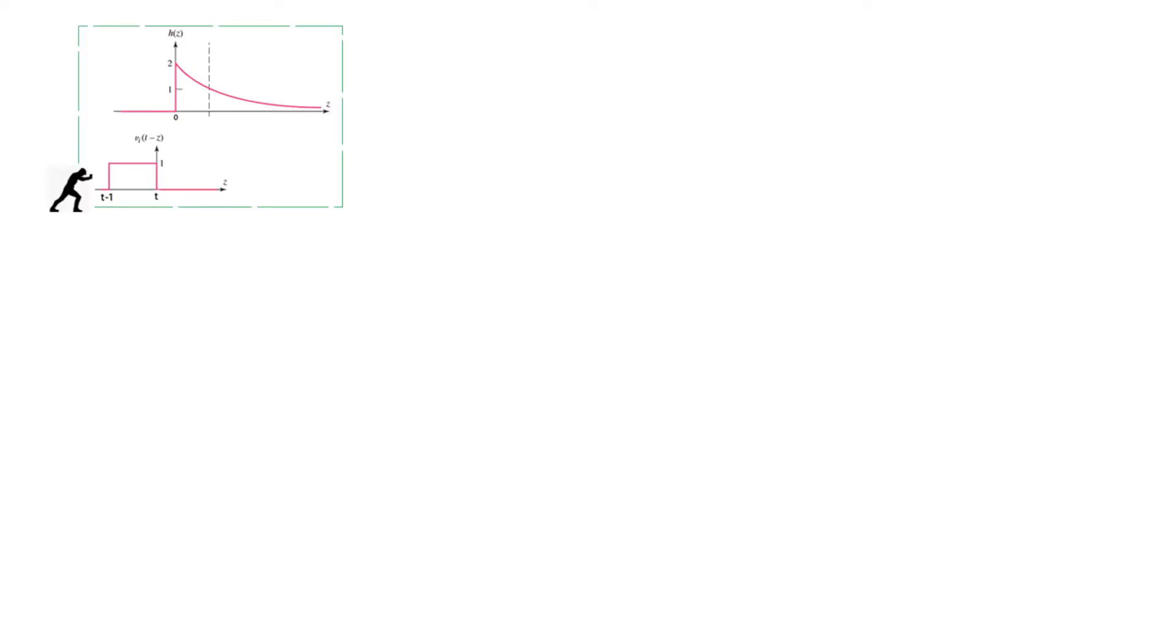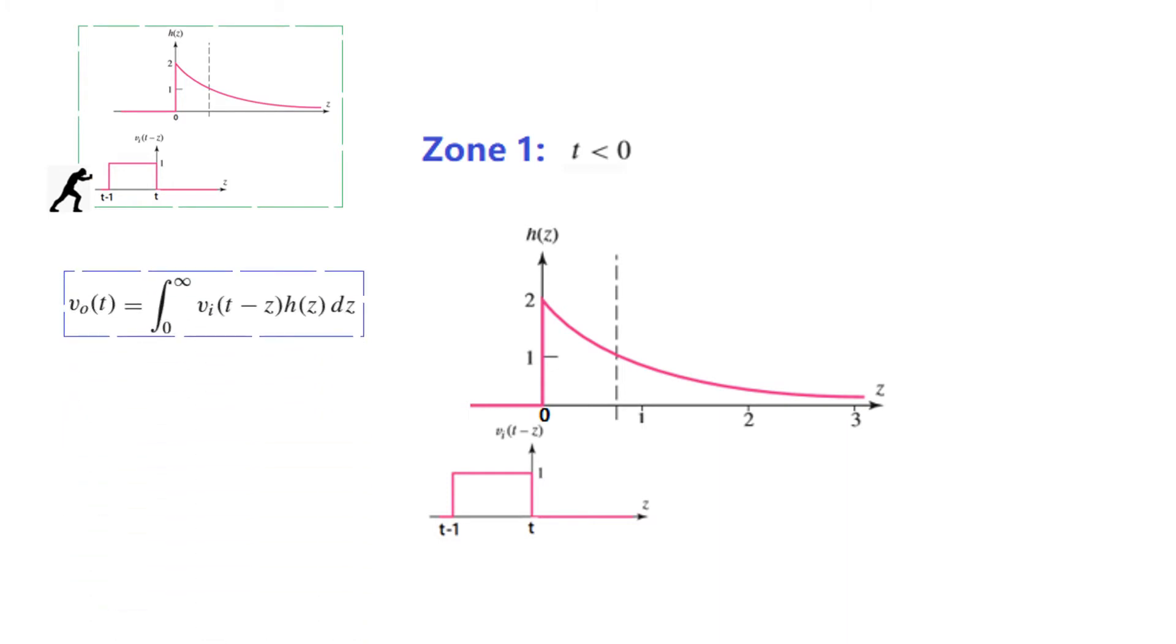Okay now we keep pushing the flip signal towards the other signal. And so let's consider first scenario, first zone. Time till this T is short of zero, that is on the left hand side. That means there is no overlap between the two signals. And therefore output will be zero. So you can say that this is zone one, T is less than zero. And we know this is the integral formula. And the multiplication of the two, these two now is zero. So our output will be equal to zero for T less than zero.